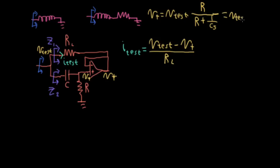So I'll have S over S plus 1 over RC. So this is a canonical high-pass filter with a cutoff frequency of 1 over RC in radians per second.